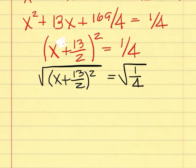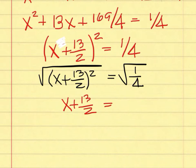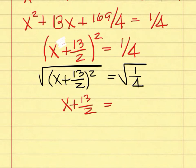What is the square root of the quantity squared of x plus 13 over 2? A student answers: x plus 13 over 2. That is right. What is the square root of 1 over 4? After calling on several students, a student correctly answers: plus or minus 1 over 2. Yes — plus or minus a half.